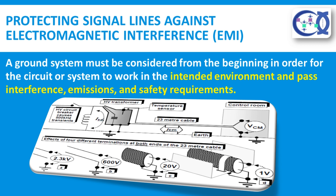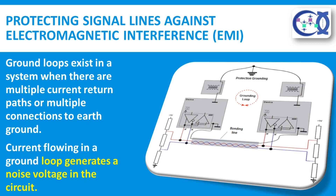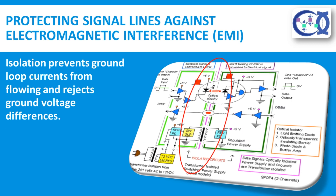A ground system must be considered from the beginning in order for the circuit or system to work in the intended environment and pass interference, emissions, and safety requirements. Proper grounding is dependent upon many factors such as the frequencies and impedances involved, the length of cabling required, and safety issues. Ground loops exist in a system when there are multiple current return paths or multiple connections to earth ground. Current flowing in a ground loop generates a noise voltage in the circuit. The most obvious way to eliminate the loop is to break the connection between the transducer and ground or between the receiver and ground. When this is not possible, isolation of the two circuits is a universal way to break the loop.